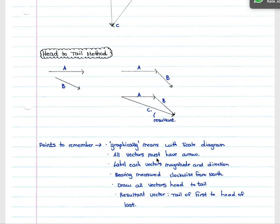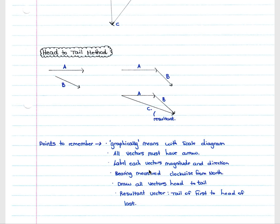Some points to remember: if the question says graphically, you must use a scale diagram with a chosen scale to represent each newton of force, then draw your vector accordingly. Use angles and bearings to determine which way forces are drawn. All vectors must have an arrowhead; label each vector's magnitude and direction. Bearing is always measured clockwise from north, and vectors must always be drawn head to tail.